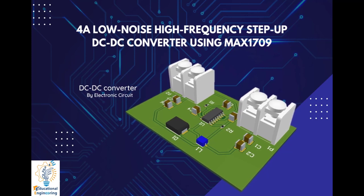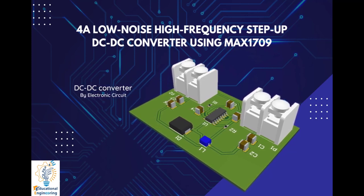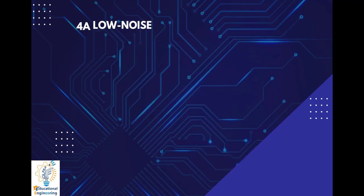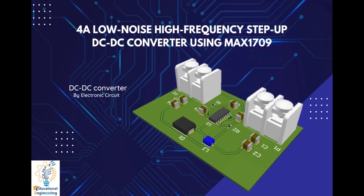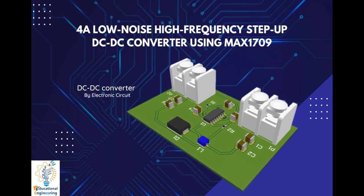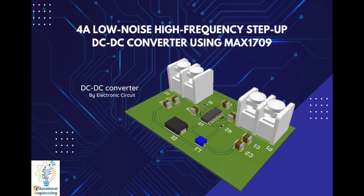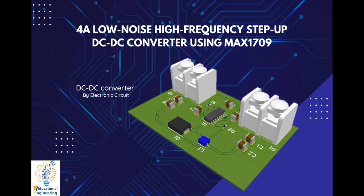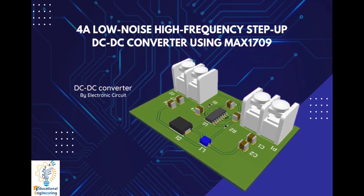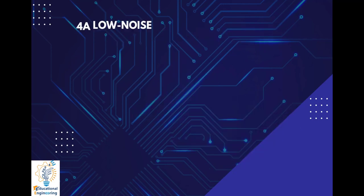Hi, and welcome again to another video. Today, we're going to learn to design a DC to DC converter circuit that uses the MAX 1709 series IC. Basically, it is a step-up conversion system that was originally made by electronic circuits.